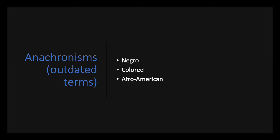First, I want to talk about the labels African Americans have used for themselves as well as those used by others. The terms on this slide — Negro, Colored, and Afro-American — were once the respectful and accepted terms for African Americans. Negro and Colored were used until the 1960s when Afro-American, the precursor to African American, came into vogue. These are all outdated terms — what we could also call anachronisms.